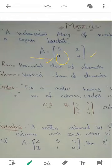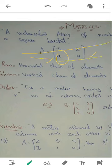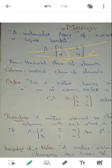A row is a horizontal chain of elements — left to right. For example, minus 5 and 2 form the first row, and 'a' and 4 form the second row. A column is a vertical chain of elements — top to bottom. So minus 5 and 'a' form column one, and 2 and 4 form column two.